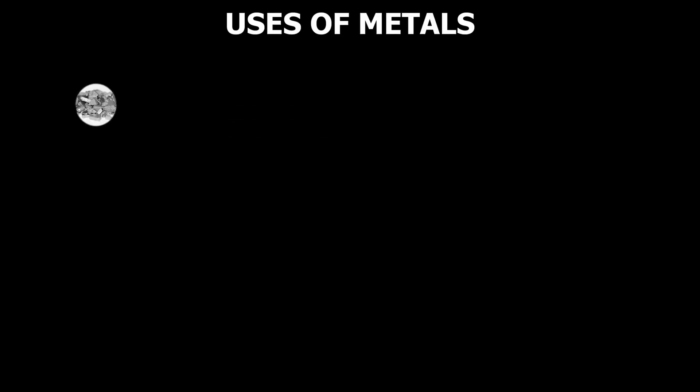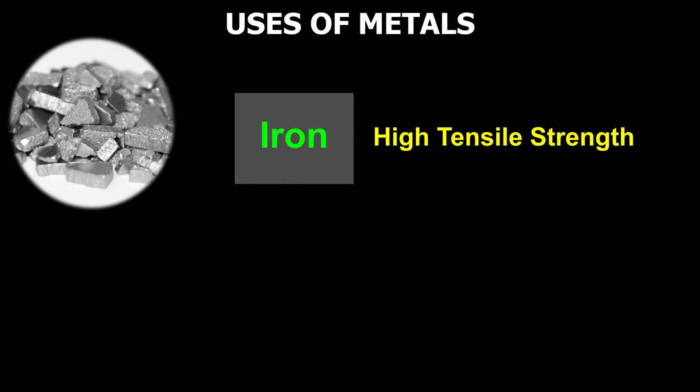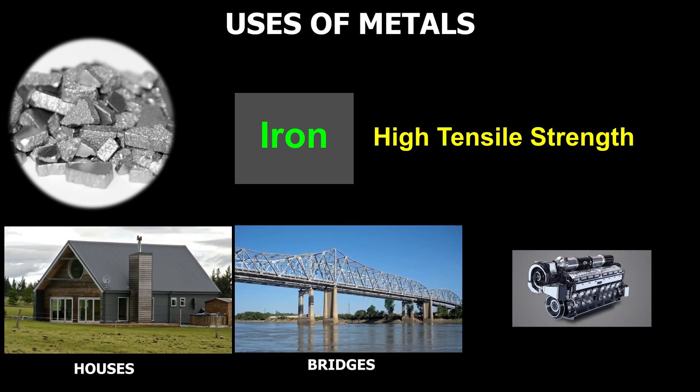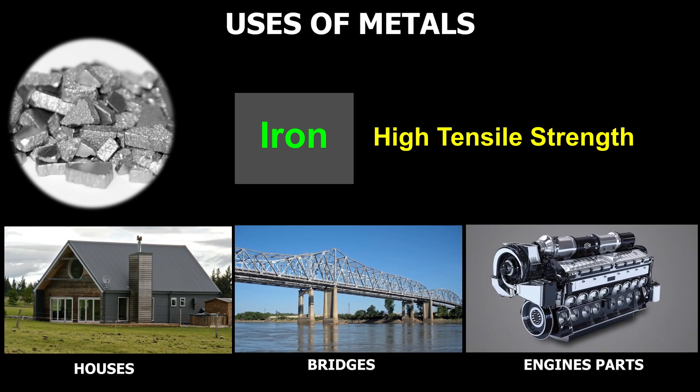Uses of Metals: Metals such as iron have high tensile strength and thus are used in making houses, bridges, and engine parts.